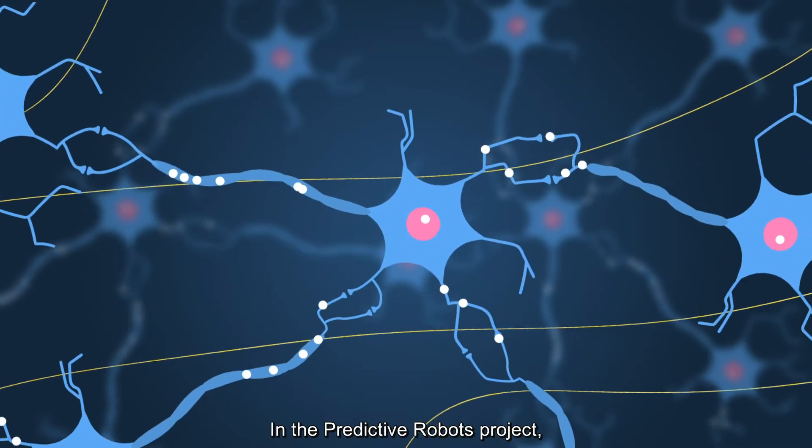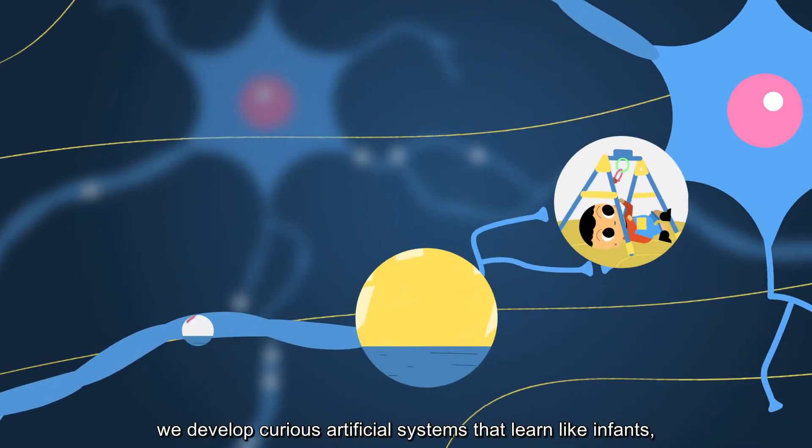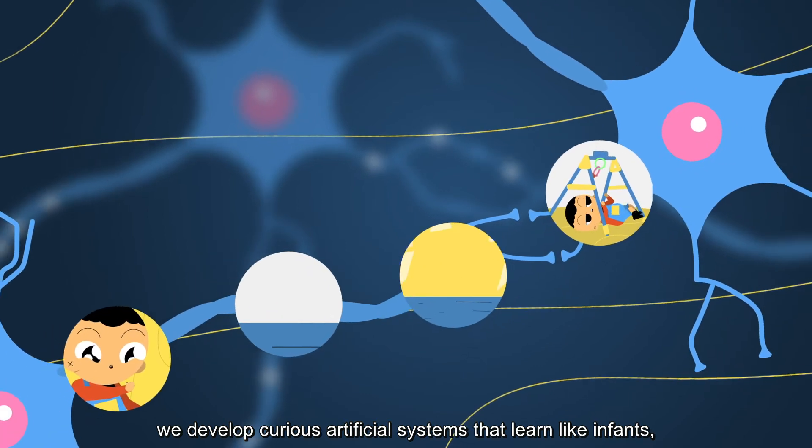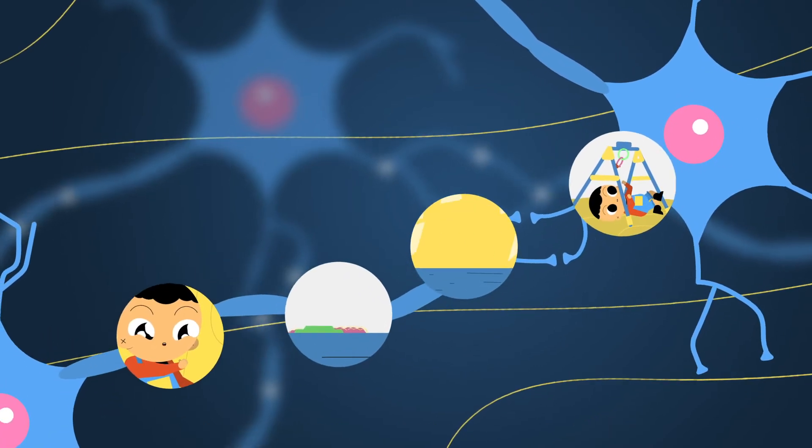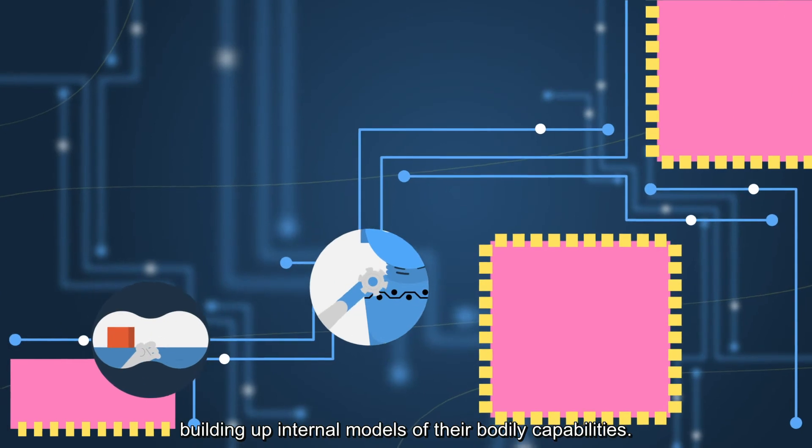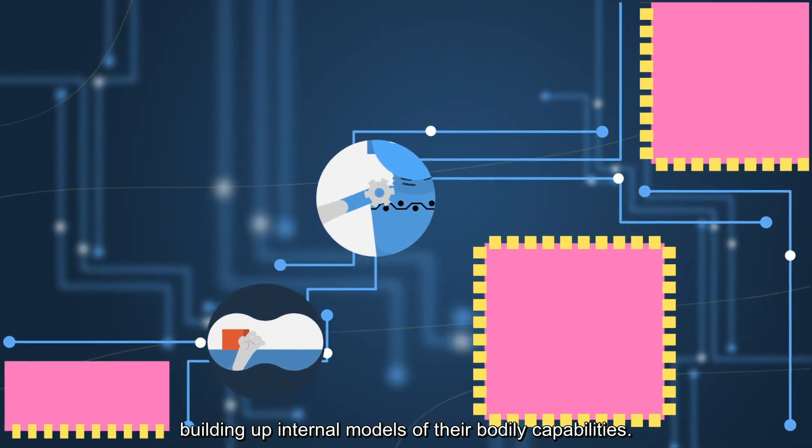In the Predictive Robots project, we develop curious artificial systems that learn like infants, building up internal models of their bodily capabilities.